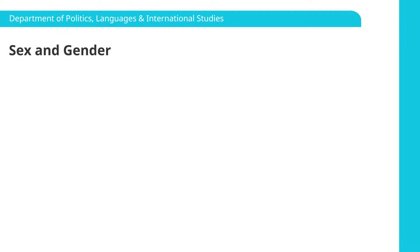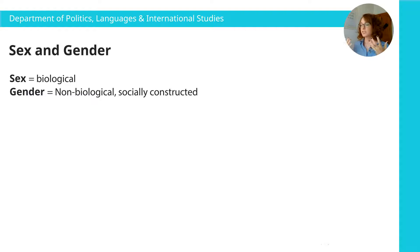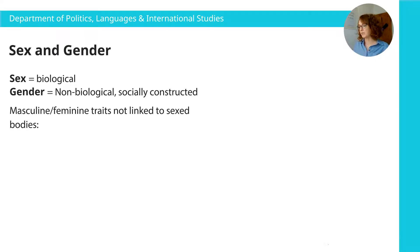Sex and gender — what do we mean when we use these terms? Broadly speaking, in everyday parlance, when we use the term sex, we mean biological difference, we mean physical difference between men and women. And when we talk about gender, we mean socially constructed difference — difference that's created through the societies that we live in, through the cultures that we inhabit, not the bodies that we happen to have been born with. So society encourages certain ideas about what it means to be a man and what it means to be a woman, which have no direct relation to our biological capabilities.